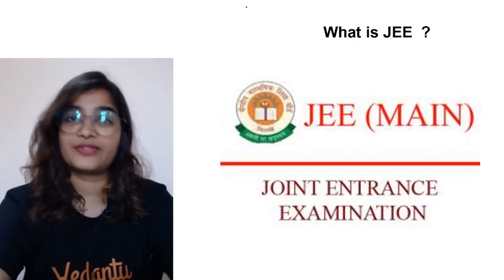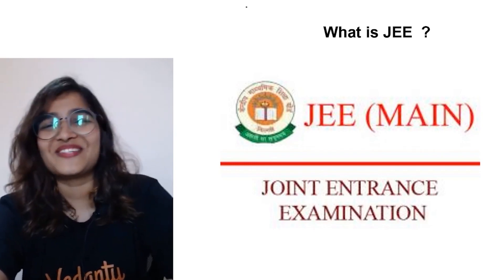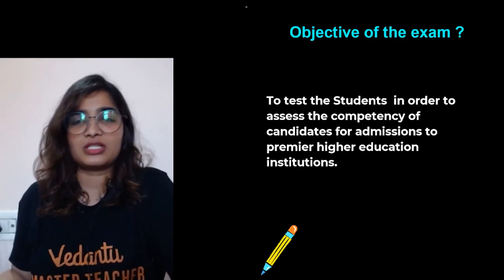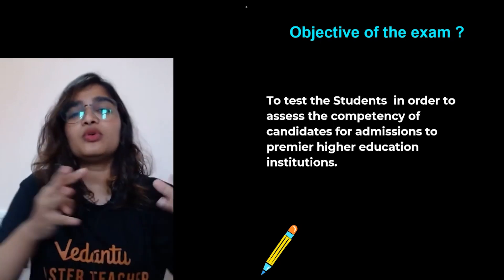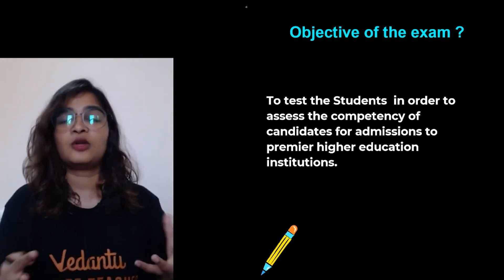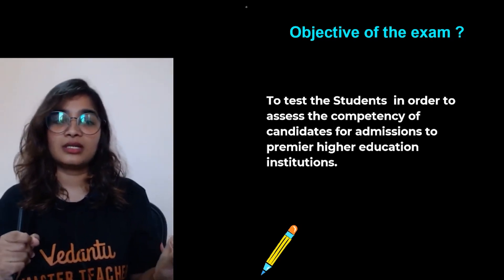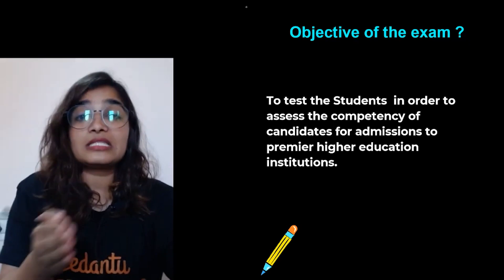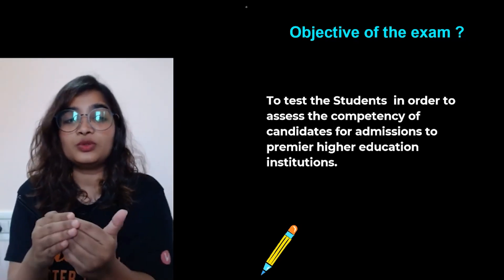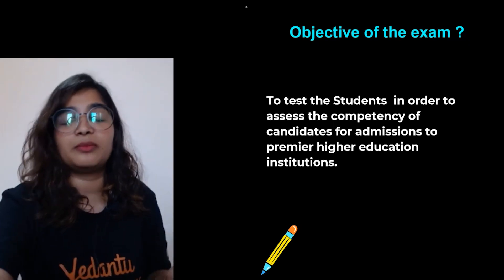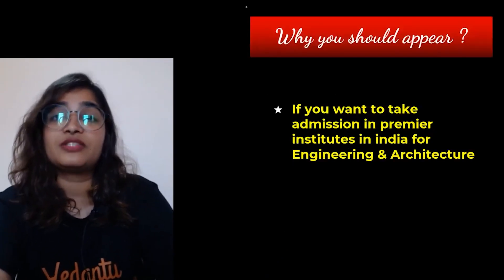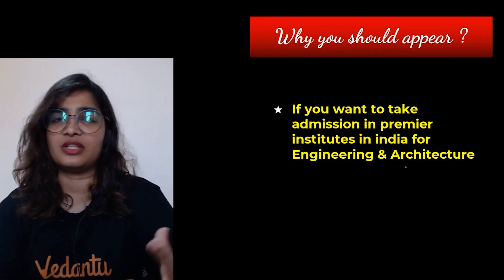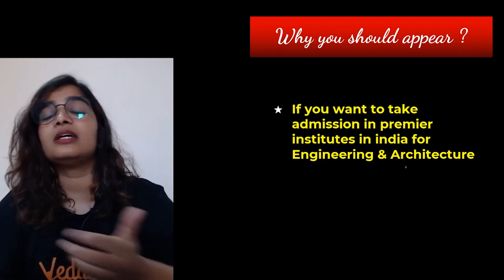JEE Main — the full form is Joint Entrance Examination. What is the objective of this exam? Everything must have an objective. This exam is designed to assess the competency of students — whether a student is eligible to study a particular subject or get a degree. Once you qualify this exam, you can get admission into those premier higher educational institutes for engineering and architecture in India.